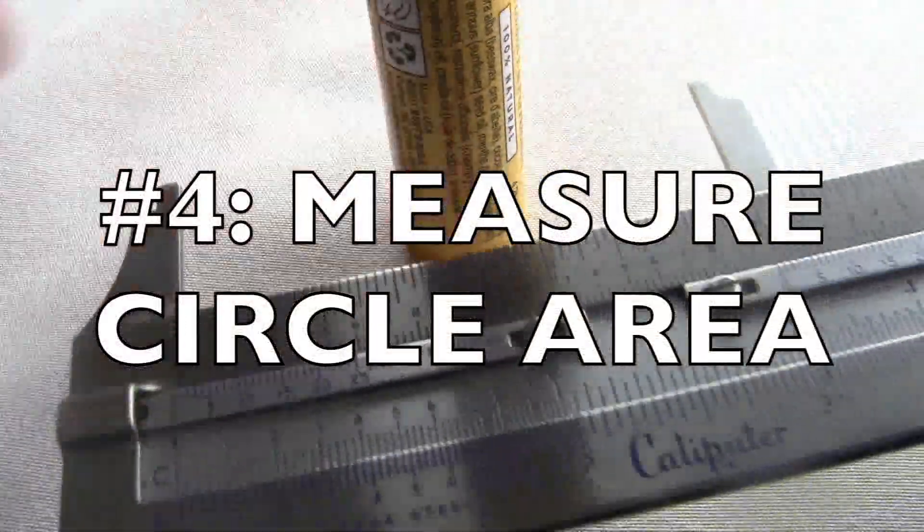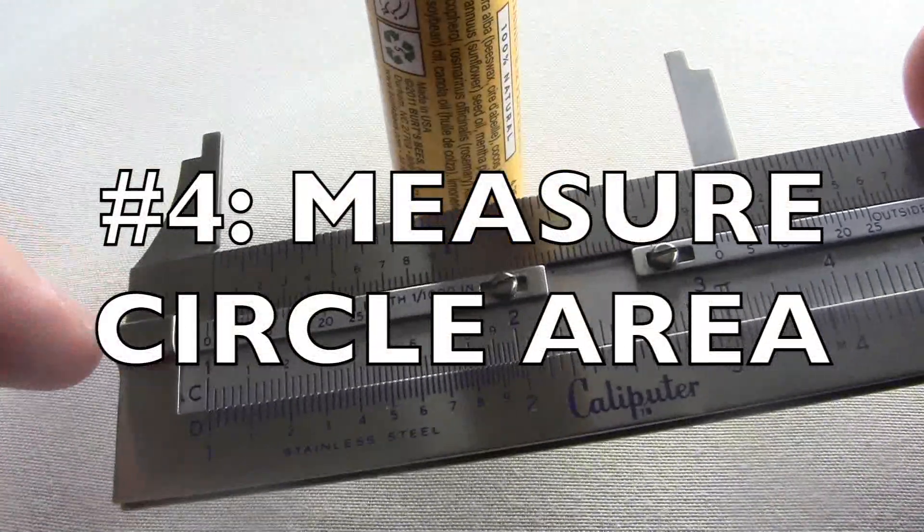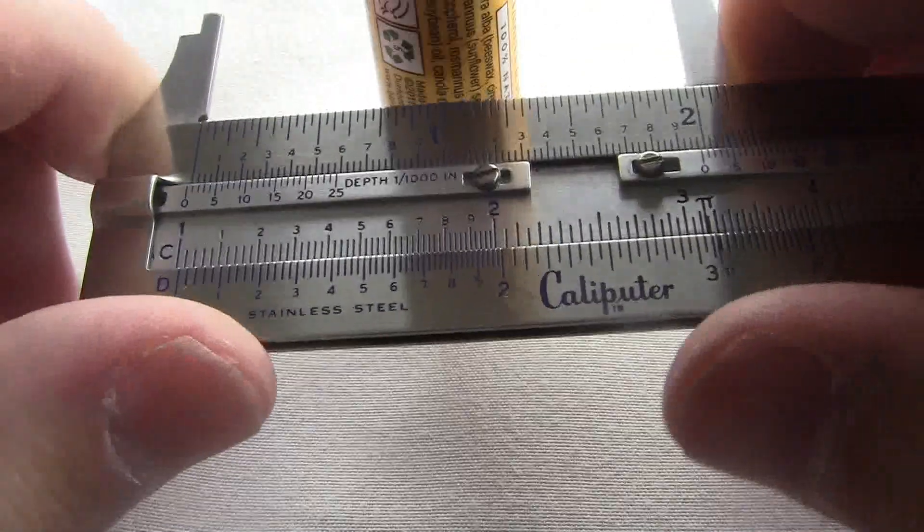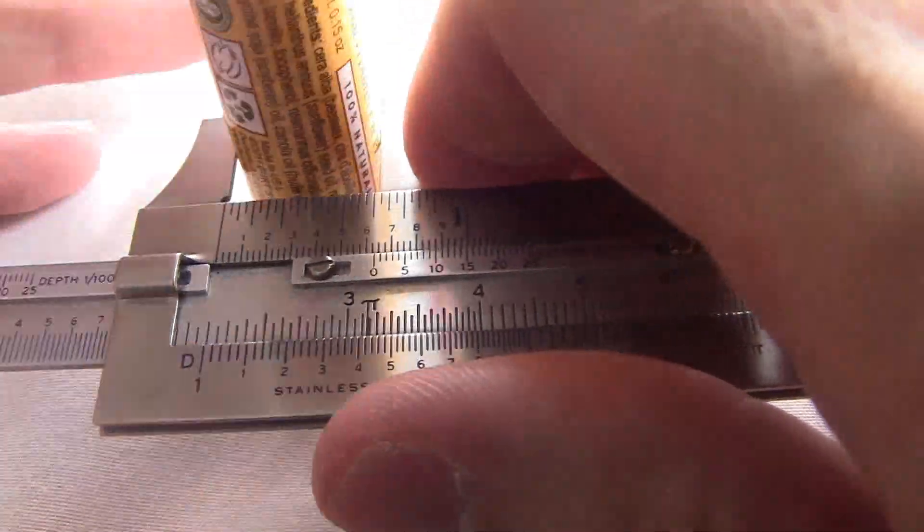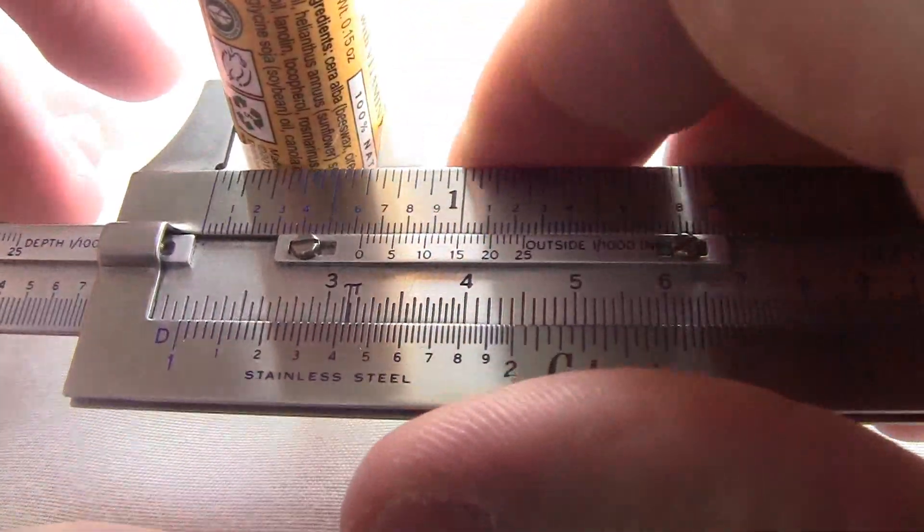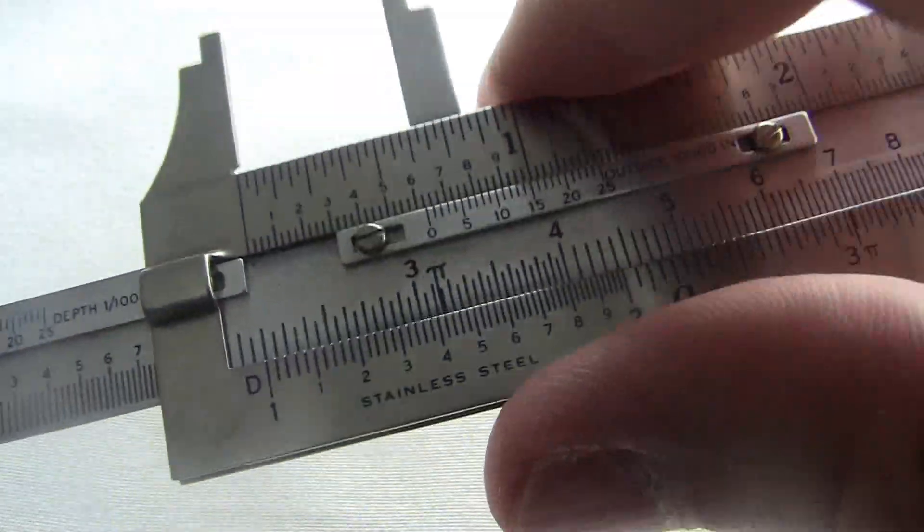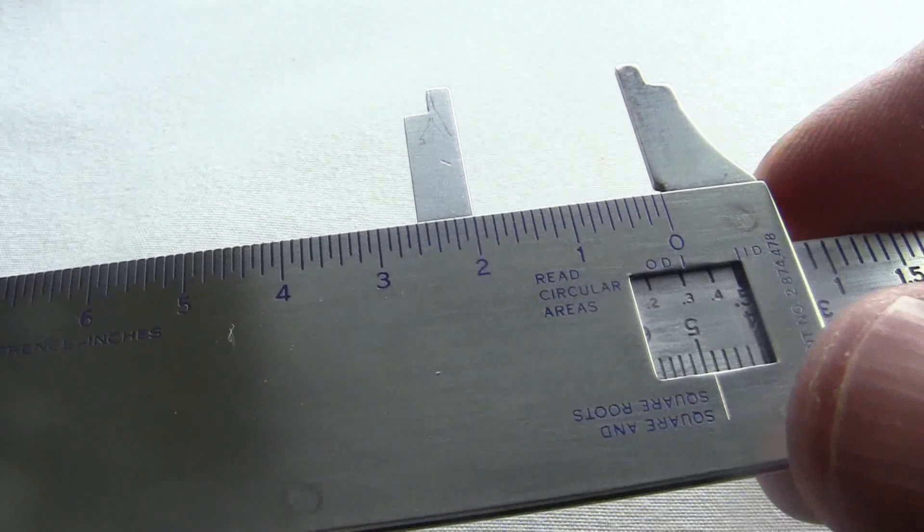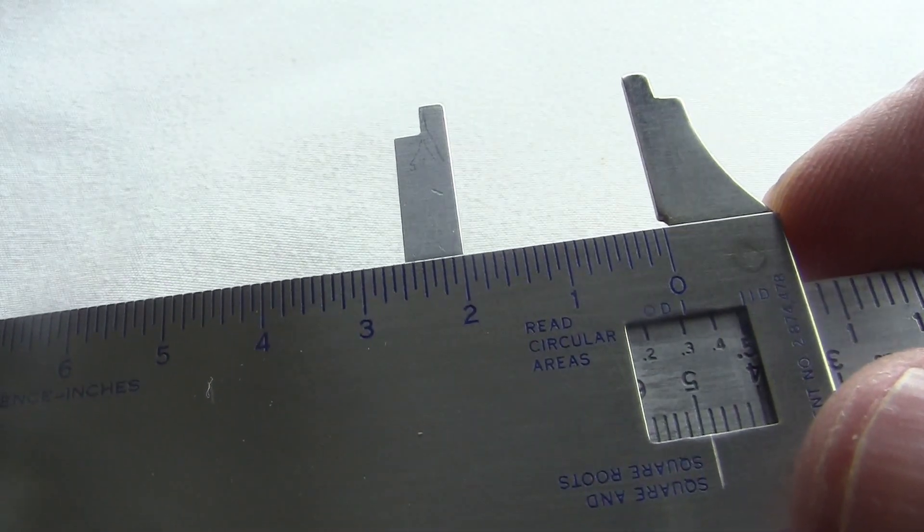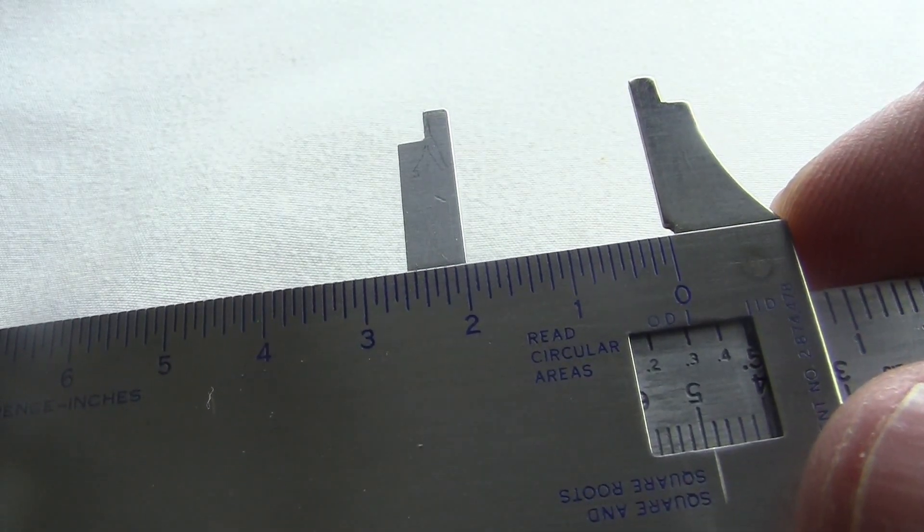Number four, measure the circle area. You can also directly measure the cross-sectional area of the circle. You measure the outer diameter as usual. And then you look on the back through this little reed circular areas window. This one looks like a little more than .3 square inches.